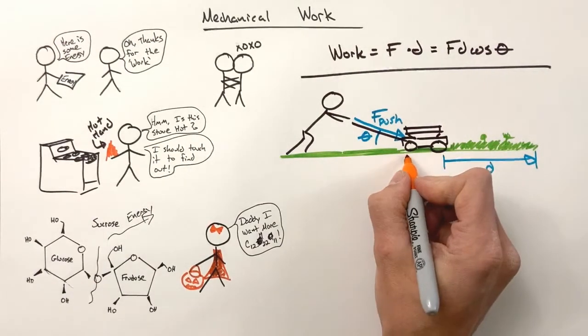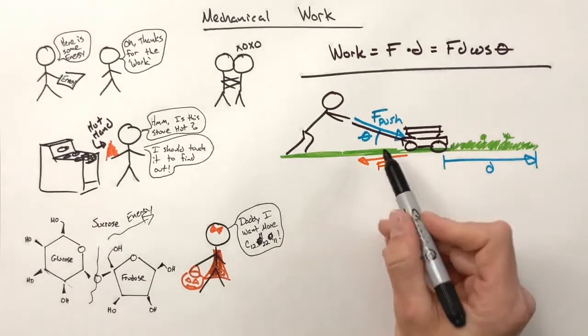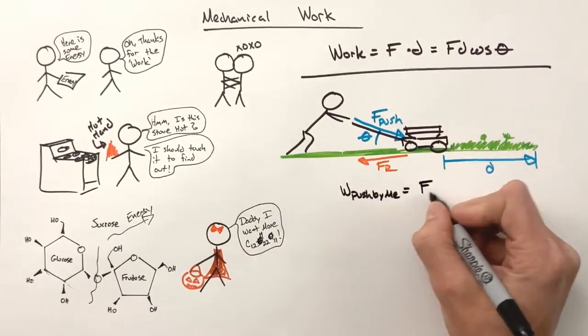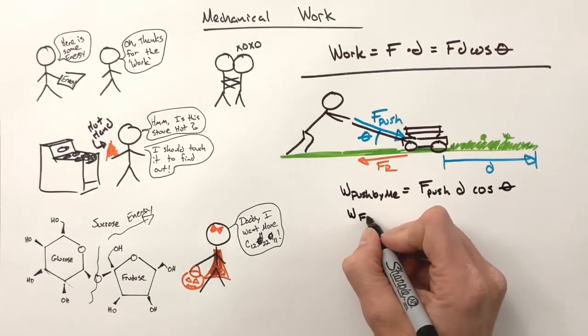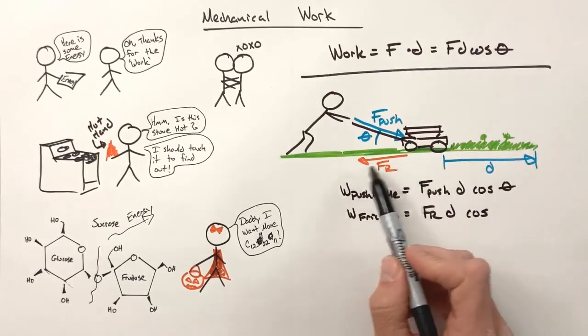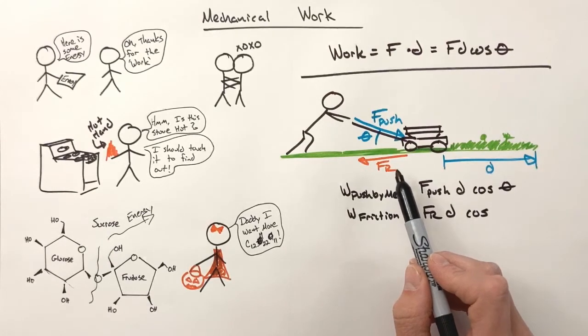Unfortunately, friction is also doing work on that mower. So while, yes, there is work by me pushing on the mower, friction is also going to do work. See, friction is in the opposite direction of displacement of the mower. So it's constantly doing negative work on the lawnmower, taking energy away.